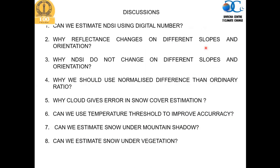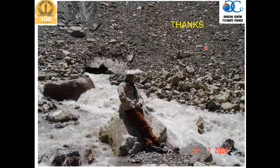Before closing, I leave you with these questions to think about: Can we estimate NDSI from digital numbers — if yes, why; if no, why? Why does reflectance change with different slope and orientation? Why does NDSI not change on different slopes and orientations? Why should we use normalized difference rather than ordinary ratio? Does cloud cover cause errors in snow cover estimation? Can we use a temperature threshold to improve accuracy? Can we estimate snow under mountain shadows and under vegetation?